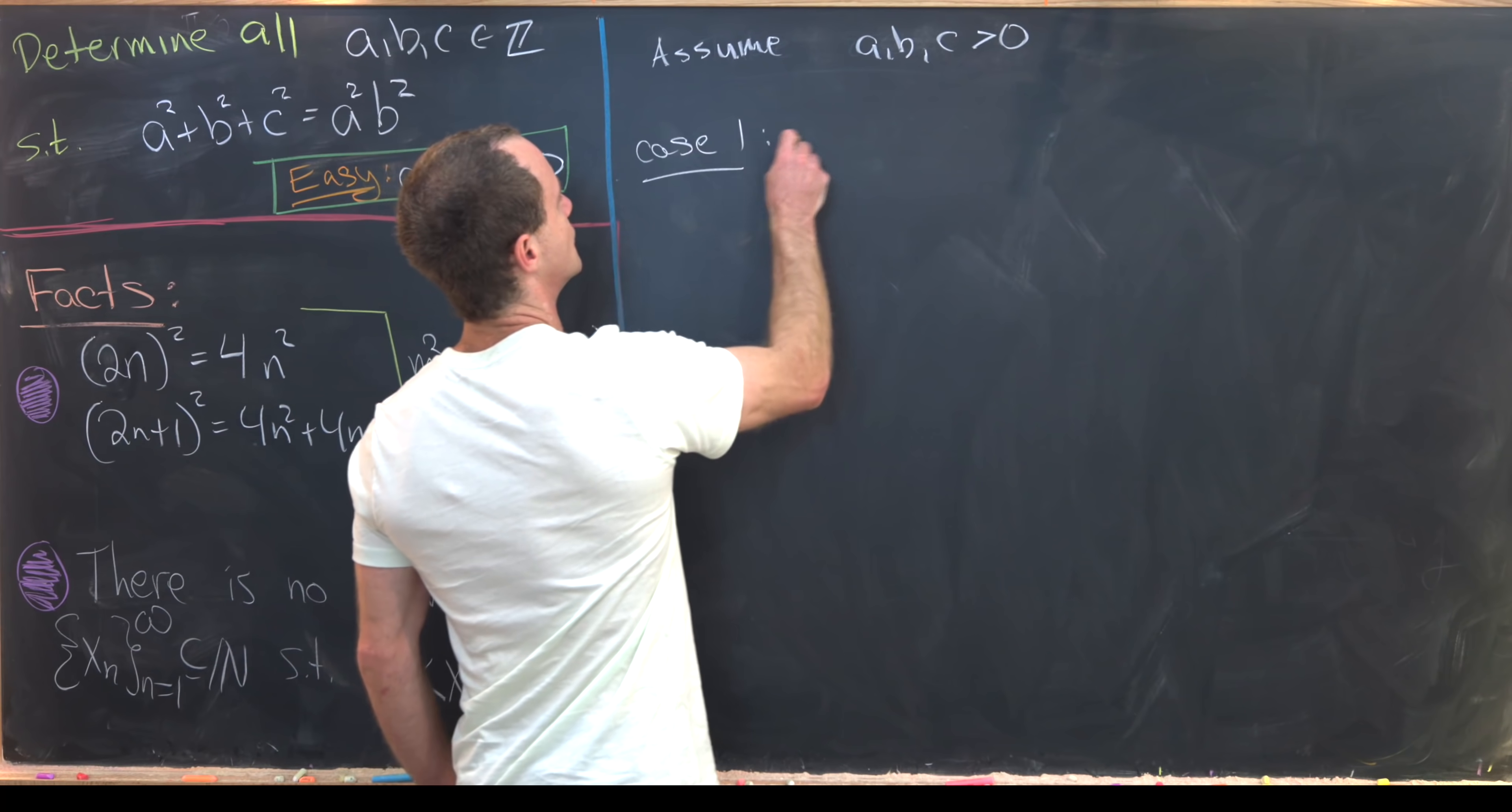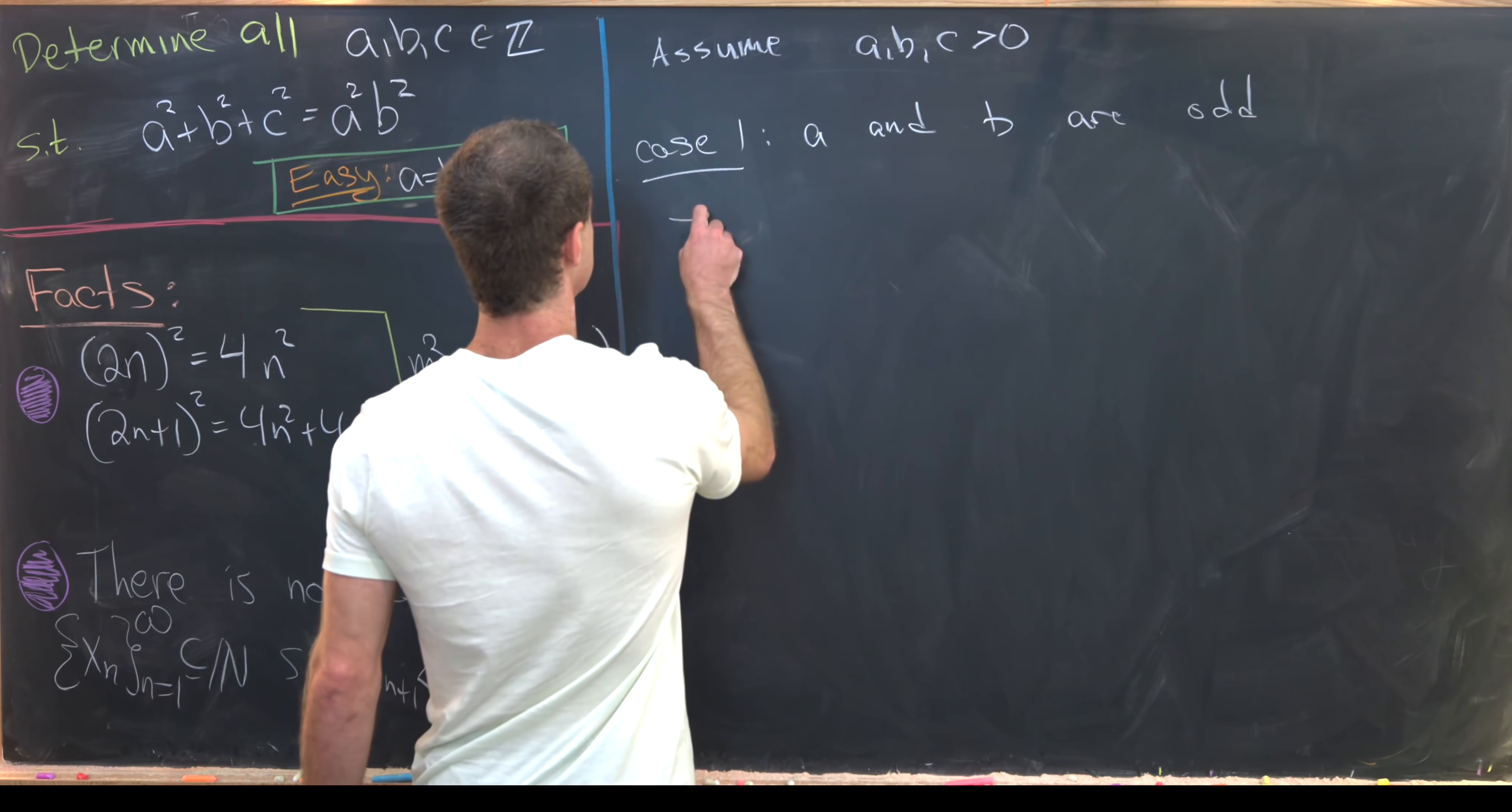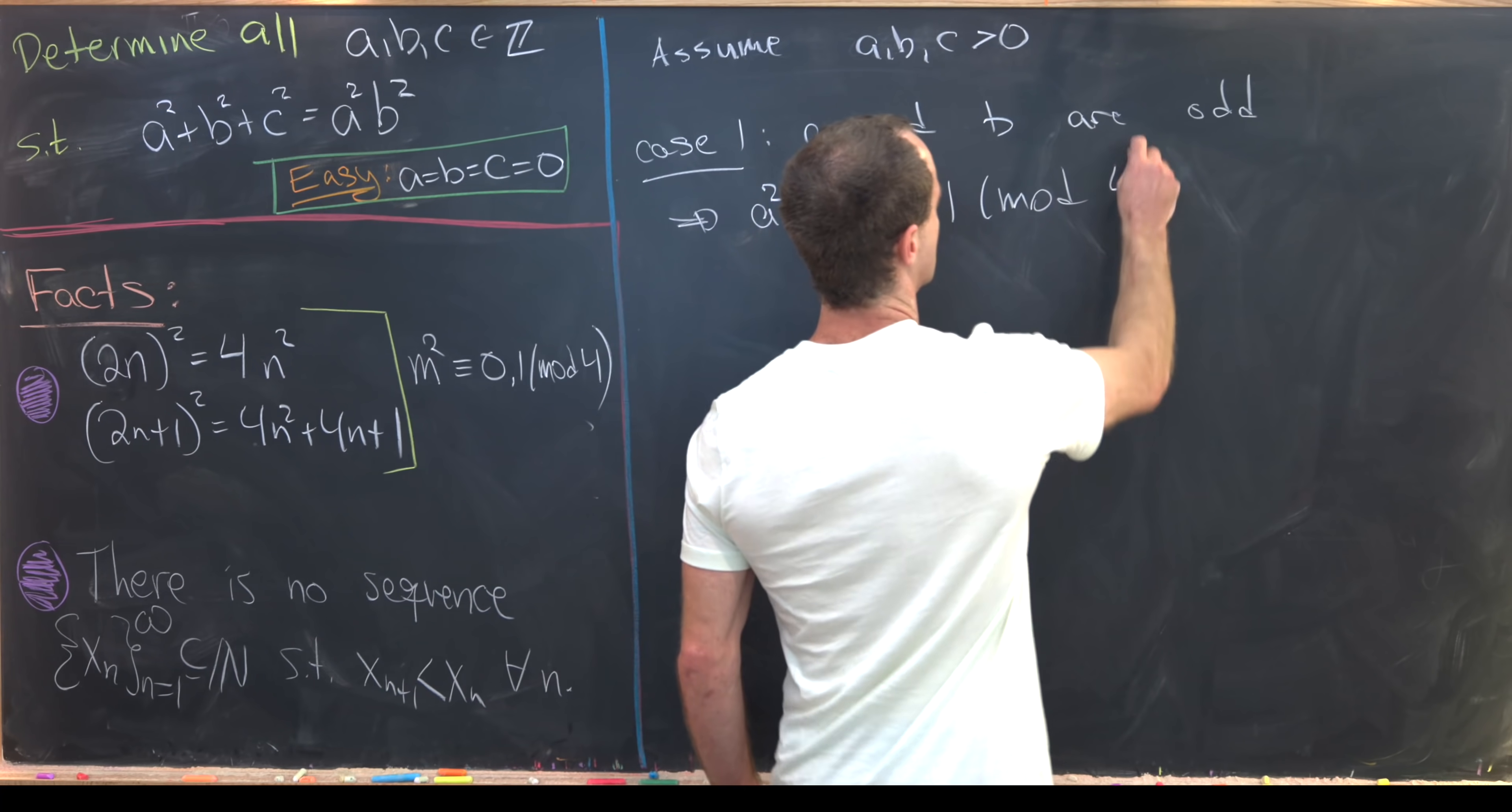So our first case will be a and b are odd. Okay, but what does that tell us? That tells us that a² ≡ b² ≡ 1 (mod 4).